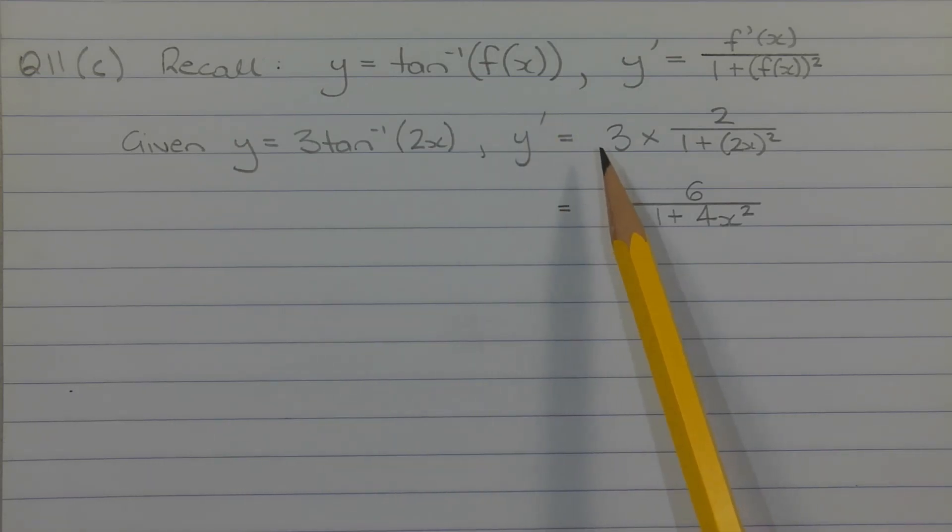So y dash is equal to 3 times 2 over 1 plus 2x in brackets squared, which equals 6 over 1 plus 4 times x squared.